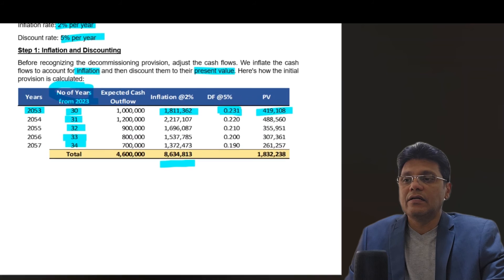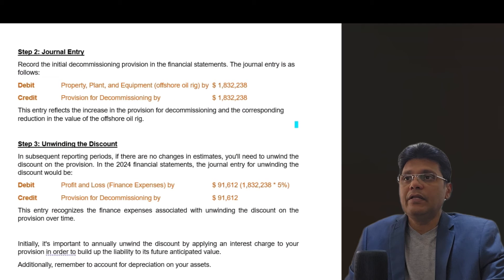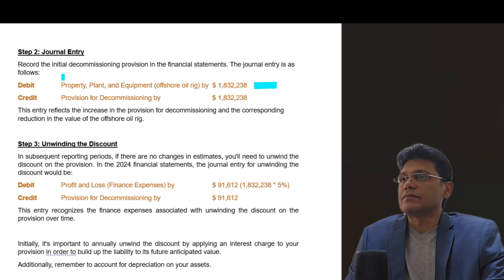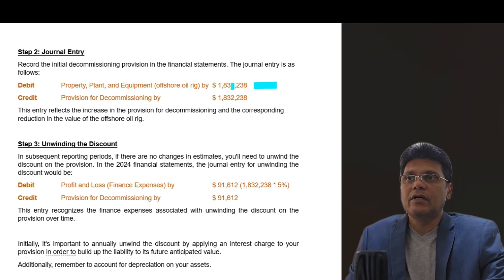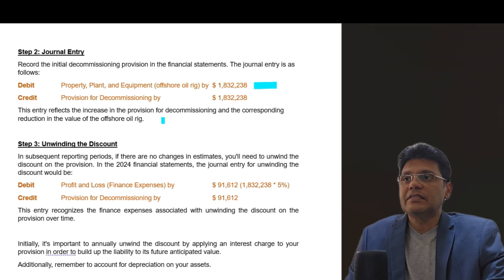Now let's look at the journal entries. To record the initial decommissioning provision in the financial statements, the journal entry is as follows: Debit Property, Plant and Equipment (oil rig) 1,832,238 — which is the present value of the decommissioning cost — and Credit Provision for Decommissioning 1,832,238. This entry reflects the increase in the provision for decommissioning and the corresponding addition to the value of the offshore oil rig.